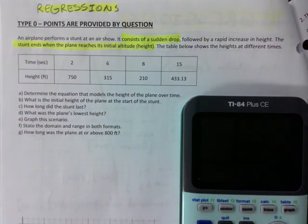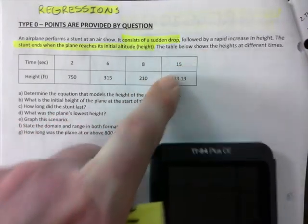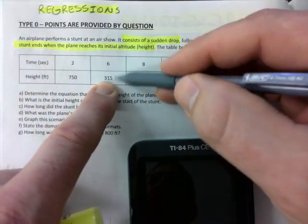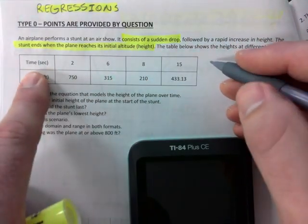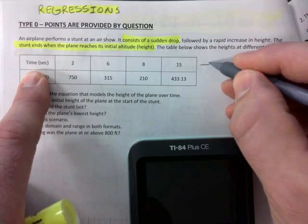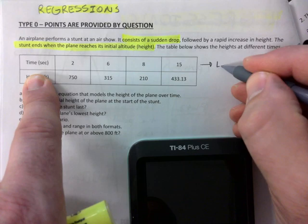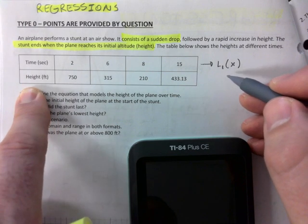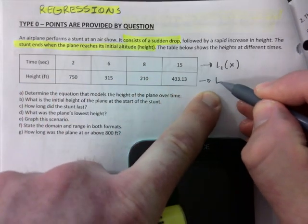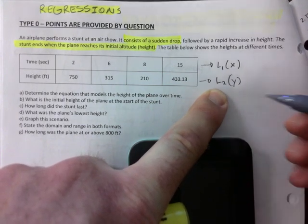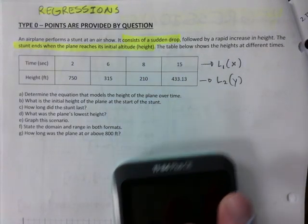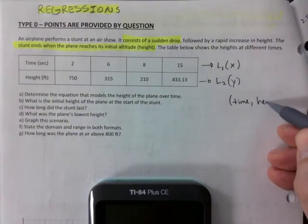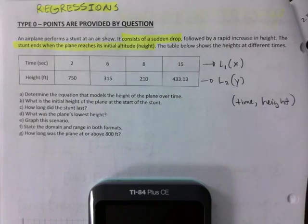The table shows heights at different times. You've got time and height — every single one goes together as a pair, so coordinates. You will never have to guess: the first row always goes into L1, which we call our x-values, and the second row goes into L2, which is your y-variable. So all x-values represent time and all y-values represent height in this case.